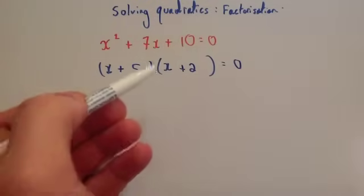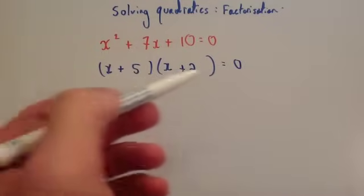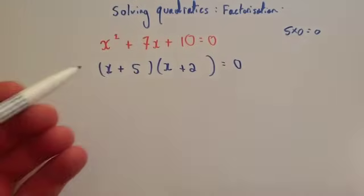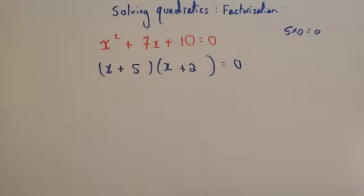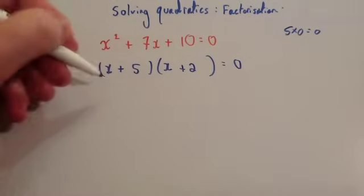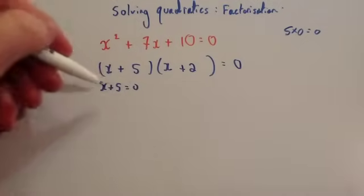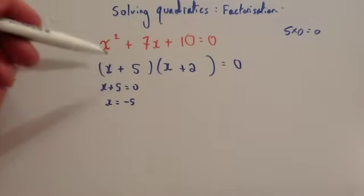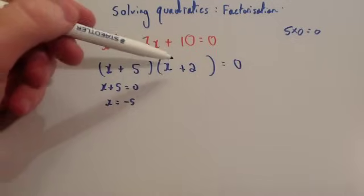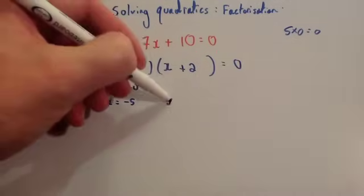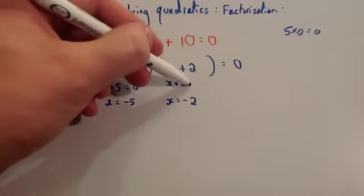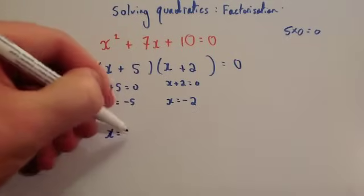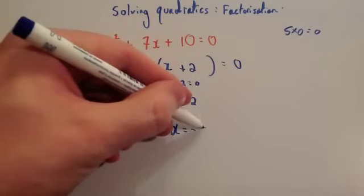We've got two brackets multiplying together to give zero, so one of them must be zero — for instance, five times zero equals zero. Either the first bracket is zero or the second bracket is zero. For x plus 5 equals zero, x equals minus 5. For x plus 2 equals zero, x equals minus 2. So the solutions are x equals minus 2 or x equals minus 5.